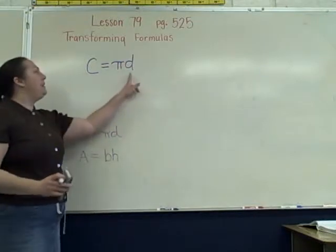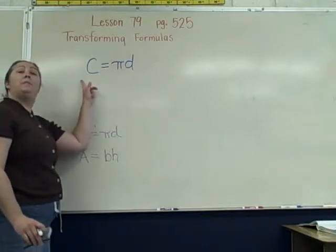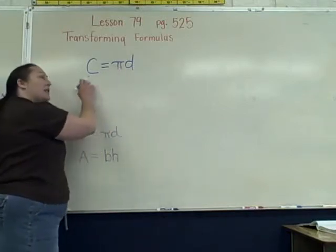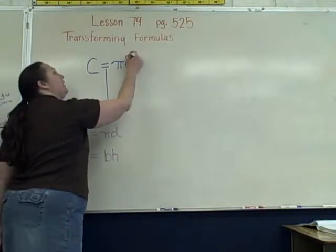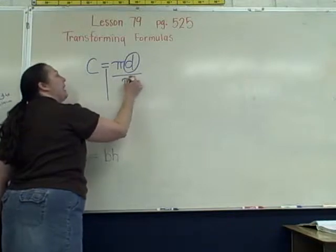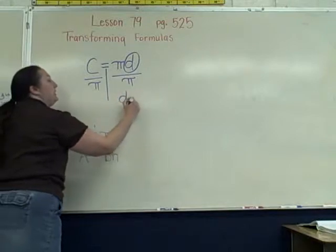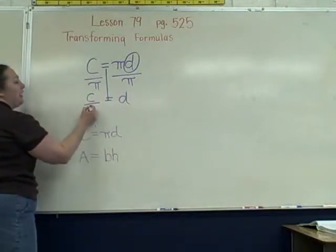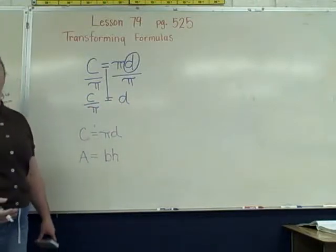If I wanted to get d by itself, I would transform this equation by moving pi over. I split it at the equal sign, identify the variable I want to isolate, and divide both sides by pi. The result is d equals circumference divided by pi. I have transformed the equation.